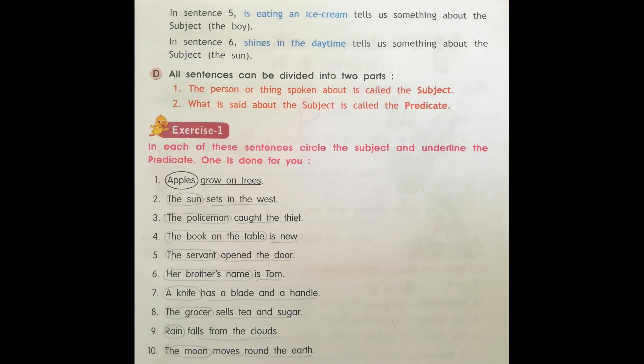Number eight: The grocer sells tea and sugar. The grocer is the subject. Sells tea and sugar is the predicate.